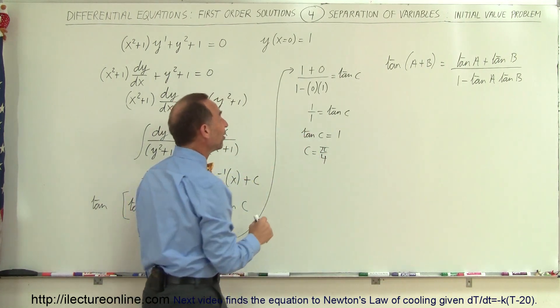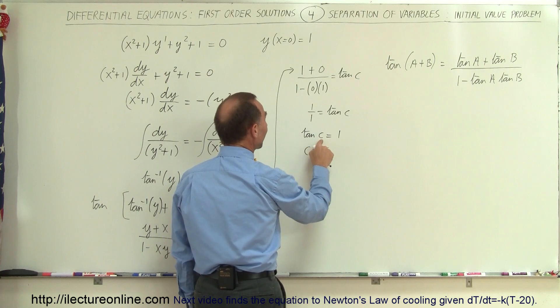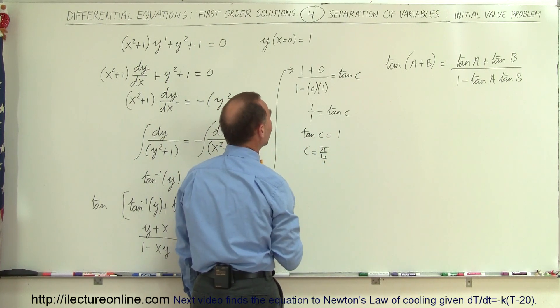π/4 is 45 degrees, so when I take the tangent of 45 degrees, I get 1, so therefore c = π/4.